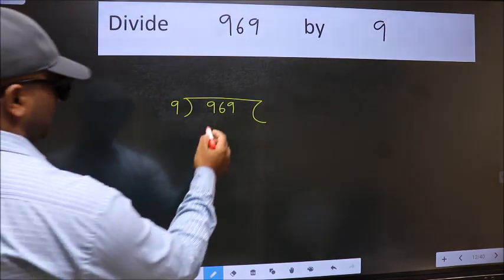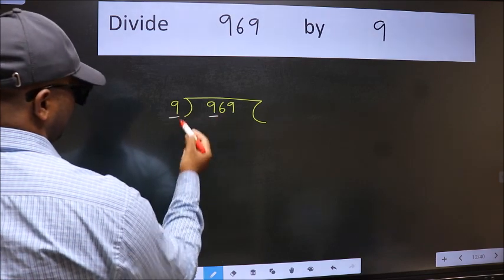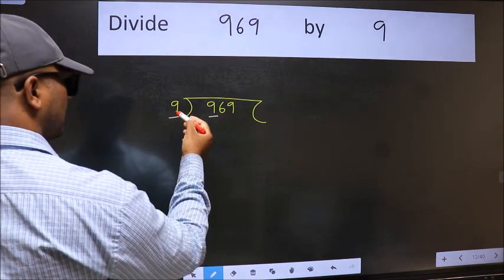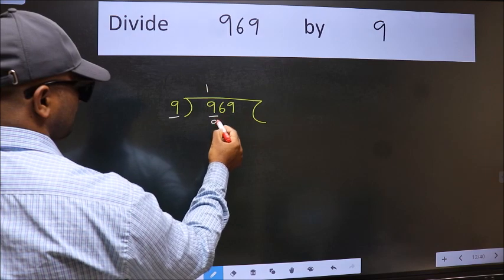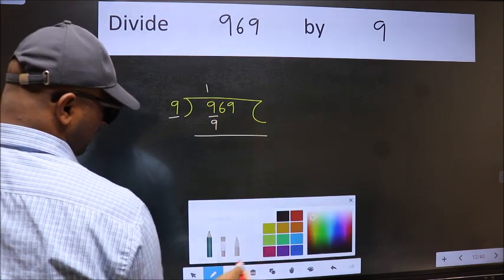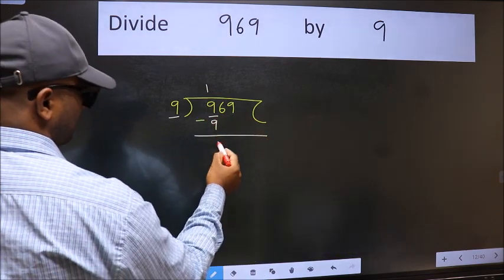Next. Here we have 9 and here 9. When do we get 9 in 9 table? 9 once 9. Now we should subtract. We get 0.